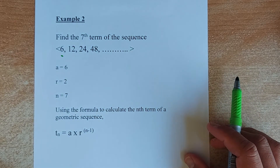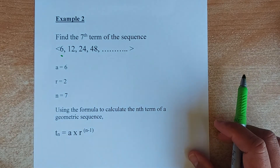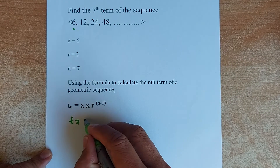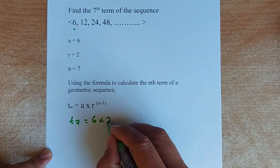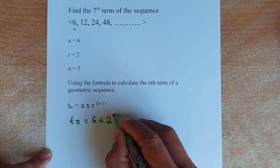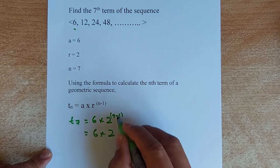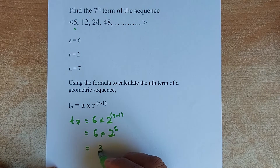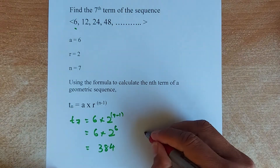We are going to use the formula TN equals A multiplied by R to the power of (N minus 1). T7: replace A with 6, R is 2, N is 7, so 7 minus 1. Simplify: 6 times 2 to the power of 6. You put this in your calculator, and the answer is 384. That will also give you an achieve.